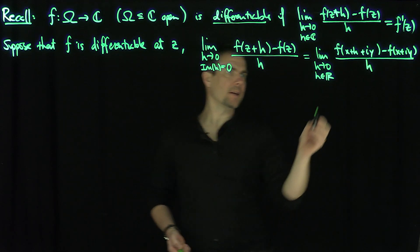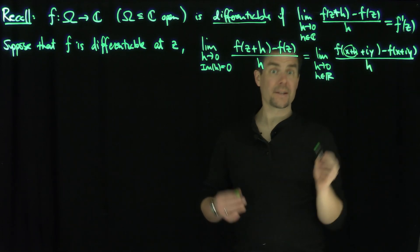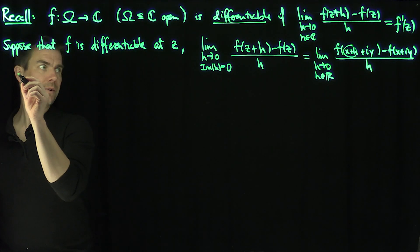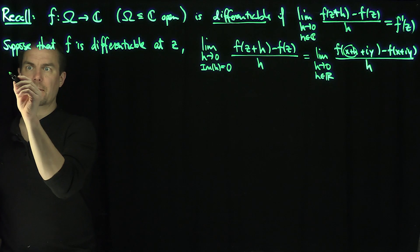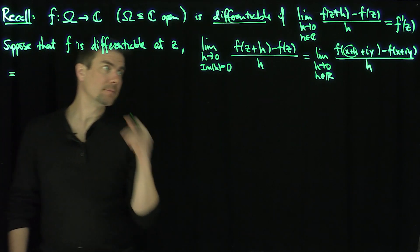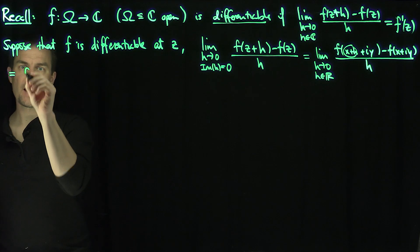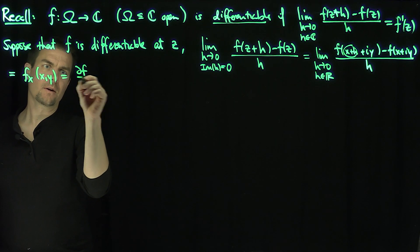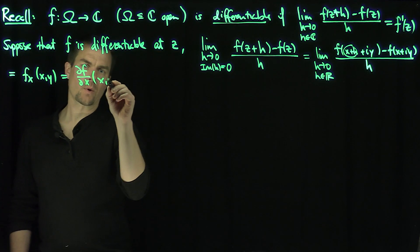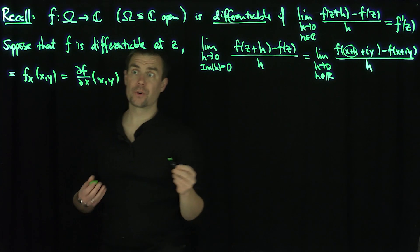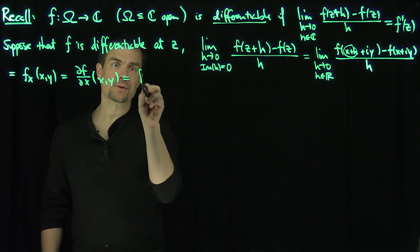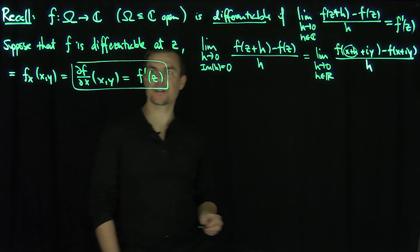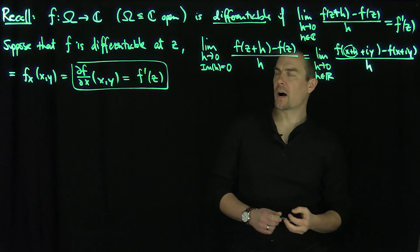Now, what's happening is x is changing and y is stationary, so we get a partial derivative. This limit equals f_x, which is ∂f/∂x at (x,y).